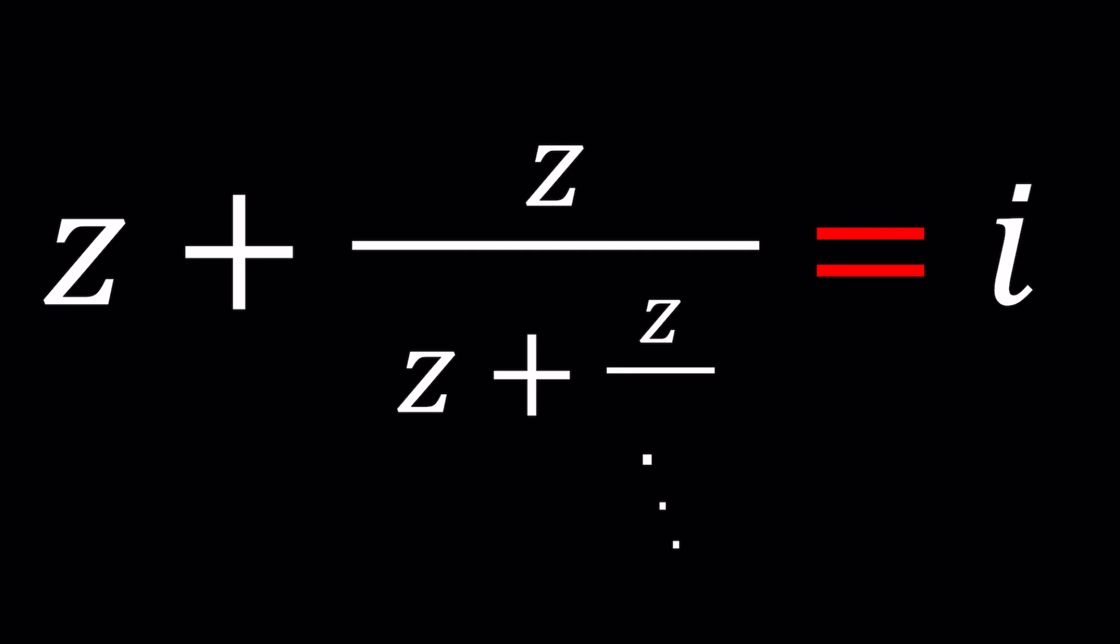We have z plus z over z plus z over and so on and so forth. This goes on forever and the expression is equal to i.